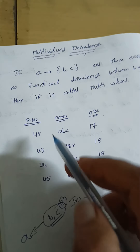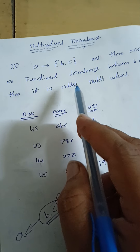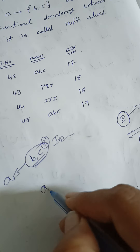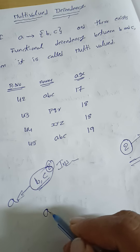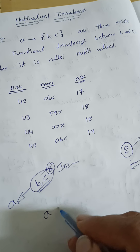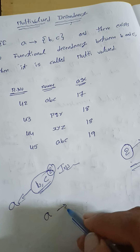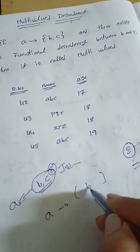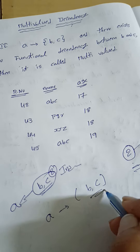So A implies B, C. With the help of only A, we will identify the B and C values here.